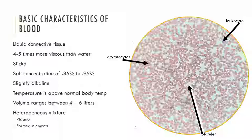The basic characteristics of blood: blood is a liquid connective tissue which constitutes approximately 8% of the human body mass. Blood is four to five times more viscous than water. Blood is also somewhat sticky and has a salt concentration of about 0.9%. Blood temperature is slightly above our normal body temperature. The blood pH is slightly alkaline with a pH in the range of 7.35 to 7.45 and blood volumes range from four to six liters. Men have about five to six liters of blood and women have four to five liters.